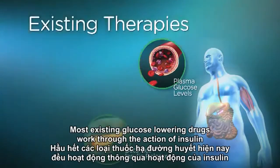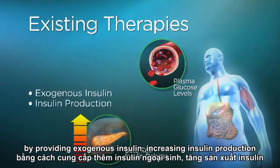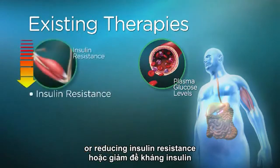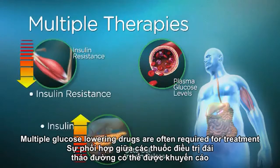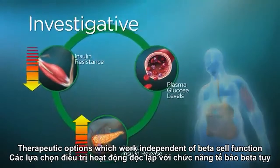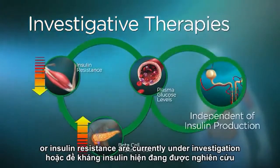Most existing glucose-lowering drugs work through the action of insulin by providing exogenous insulin, increasing insulin production, or reducing insulin resistance. Multiple glucose-lowering drugs are often required for treatment. Therapeutic options which work independent of beta cell function or insulin resistance are currently under investigation.